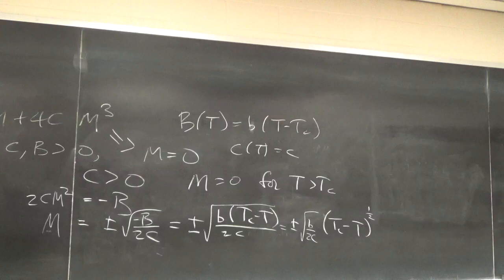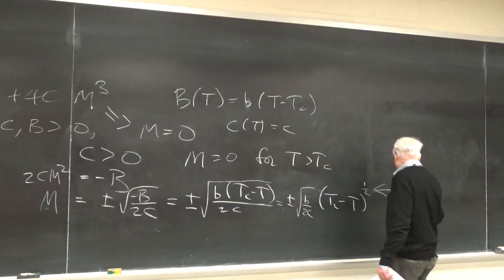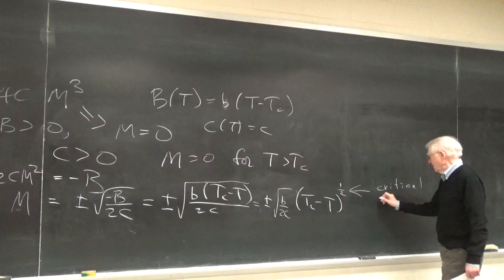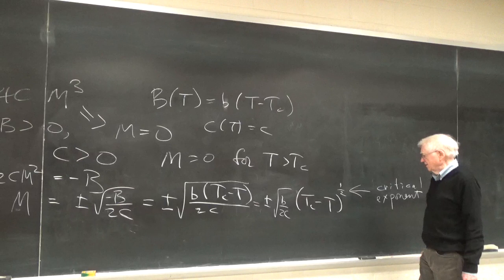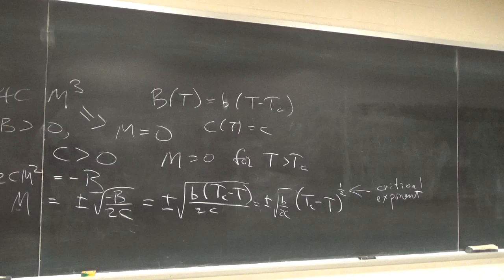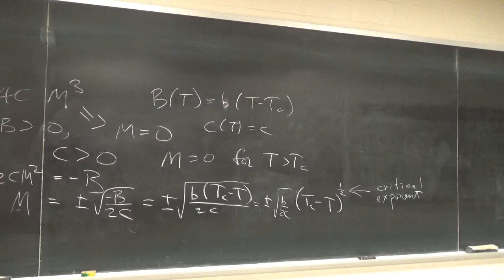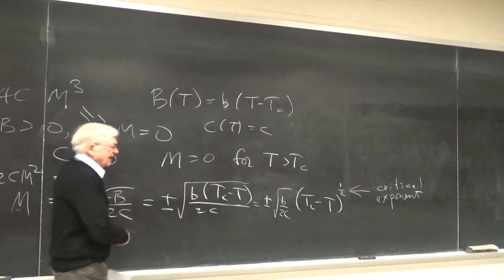M equals zero for T greater than Tc. That one-half is called the critical exponent. Notice that very little was said about the specific system here. The one thing that was said was symmetry — namely G(−M) = G(M) — and that we were looking at small H, using the Gibbs free energy, and expanding for small M. So one expects behavior like this for a large class of systems.